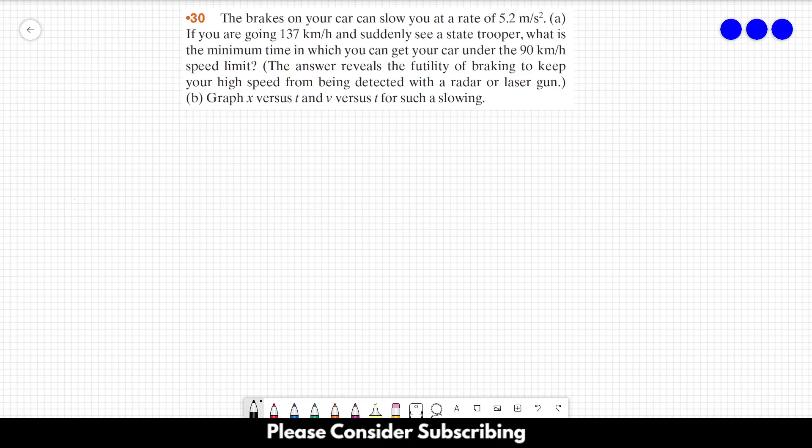Number 30, the brakes on your car can slow you at a rate of 5.2 meters per second squared. Letter A, if you're going 137 kilometers per hour and suddenly see a state trooper, what is the minimum time in which you can get your car under the 90 kilometers per hour speed limit? The answer reveals the futility of braking to keep your high speed from being detected with a radar or laser gun. Let there be graph X versus T and V versus T for such a slowing.